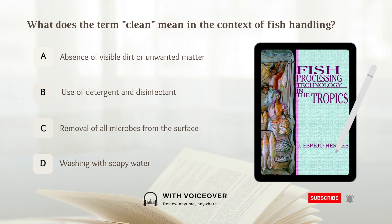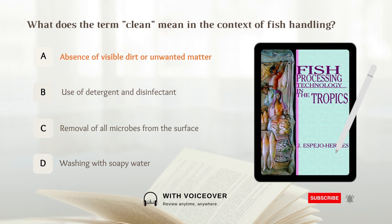What does the term 'clean' mean in the context of fish handling? A. Absence of visible dirt or unwanted matter. B. Use of detergent and disinfectant. C. Removal of all microbes from the surface. D. Washing with soapy water. Answer: A. Absence of visible dirt or unwanted matter.